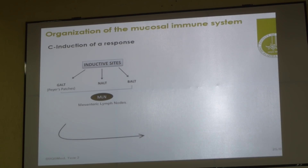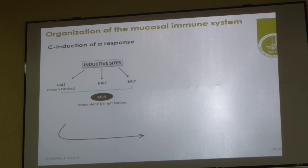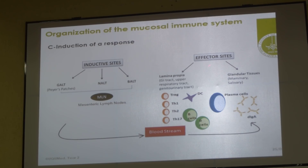Mucosal immunity is not just about GALT, BALT, NALT — that is one part of it. In the Peyer's patches the induction phase takes place — they catch the antigen. You can see that in GALT or Peyer's patches, NALT or BALT, the induction phase takes place. Then they go into the mesenteric lymph nodes to activate the cells. Once they are activated, they go back to the lamina propria — this is the effector site. Once they are activated into Tregs, TH1, TH2, TH17, or even plasma cells producing IgA — these dimeric immunoglobulin A — they all go back to the lamina propria.